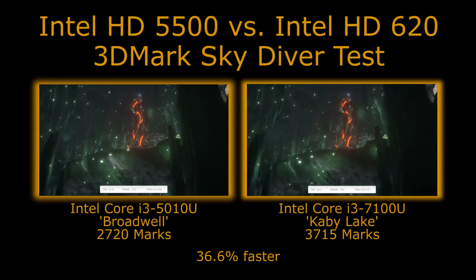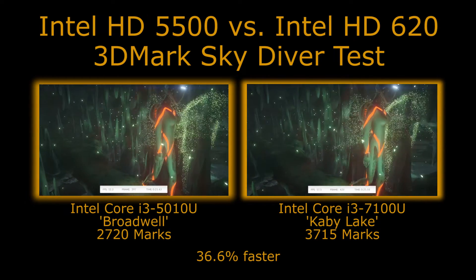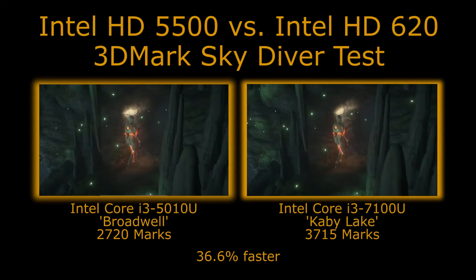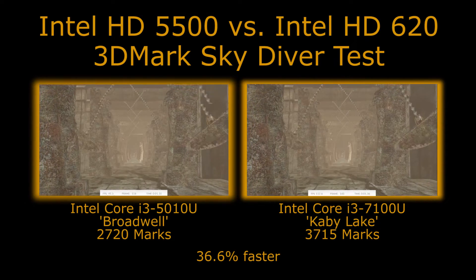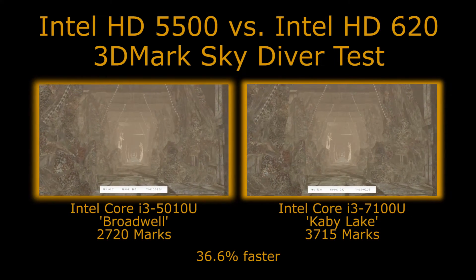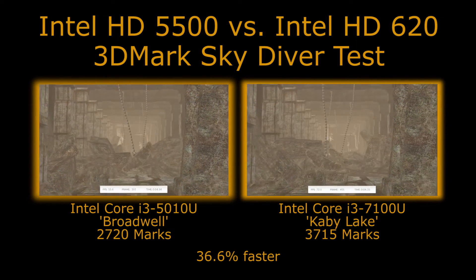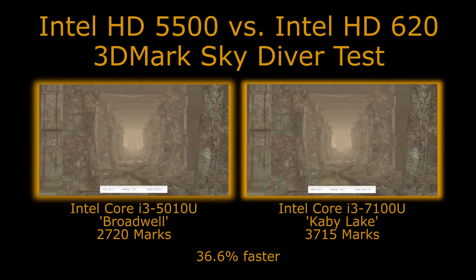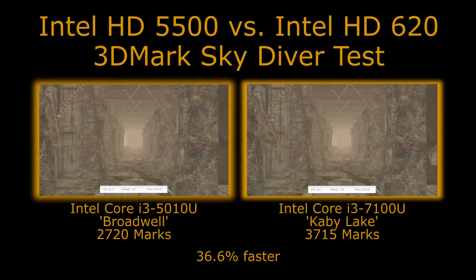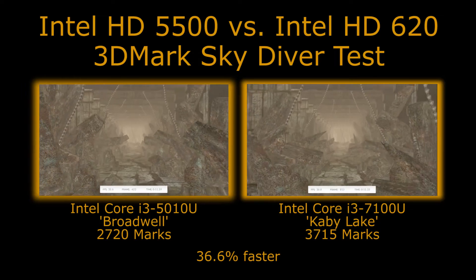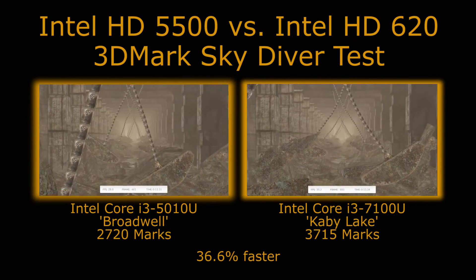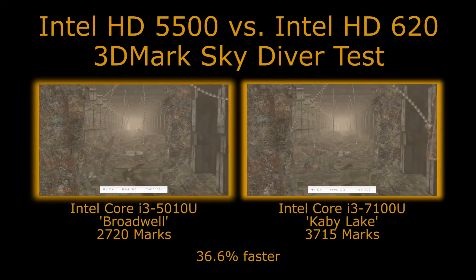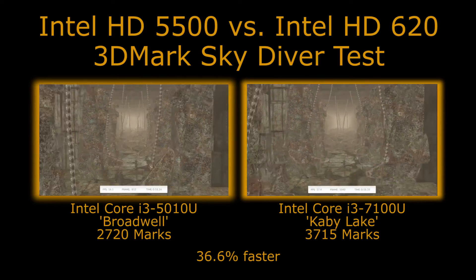I've always found Broadwell was a bit of a strange performer — I didn't tend to find it gave a huge advantage over its predecessor Haswell. So between HD4400 and 5500 there was never a huge gap. Similarly between 520 and 620 there isn't a huge gap, but there has been a nice generational improvement from the Haswell/Broadwell architecture to the Skylake and Kaby Lake architecture.